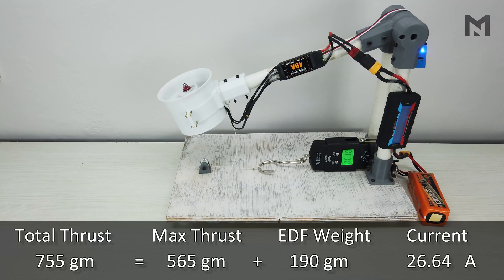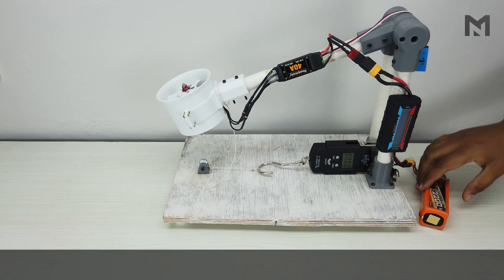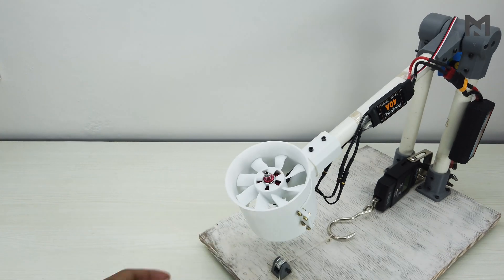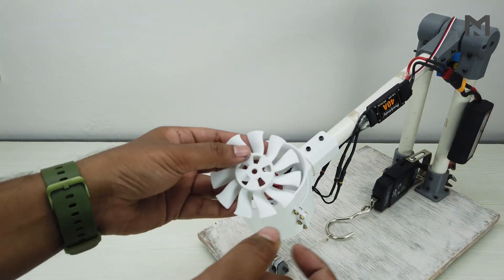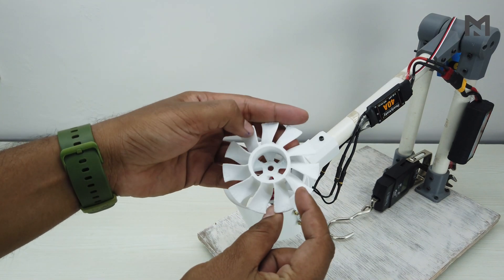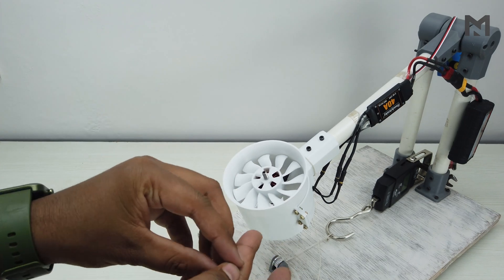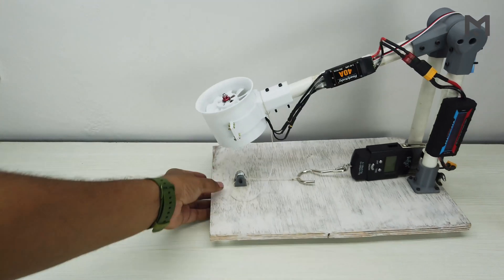We get a total thrust of 755 grams at 26.64 Amperes. Now remove the battery and we will replace this propeller with the 11 bladed one. This is the 11 bladed propeller that I am going to use. Earlier I used a 12 bladed one, but someone suggested to use the odd number of blades to prevent symmetrical axial vibration which can cause self destruction.